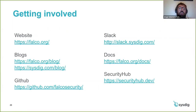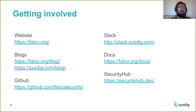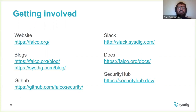If you want to get more involved in the Falco community, the first place to start is the falco.org website. You can find interesting blog posts and more content on Falco on the falco.org blog, but also on the Sysdig blog where we write a lot about Falco. Of course, on the GitHub organization, and we also have the Slack community, docs, and the security hub, where you'll be able to discover Falco rules but also contribute rules that you might be writing yourself.